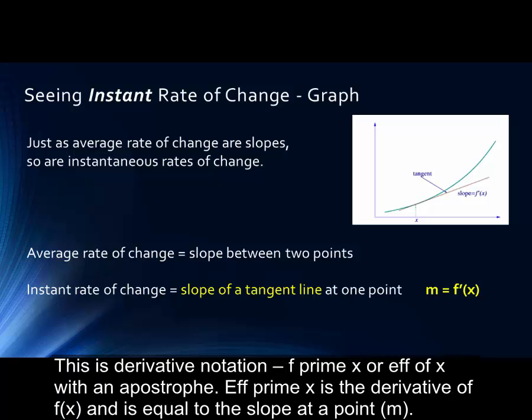This is derivative notation, f prime x or f of x with an apostrophe. f prime x is the derivative of the function f of x and is equal to the slope at point m.